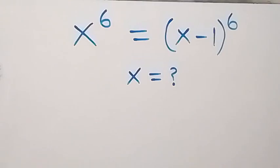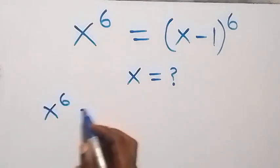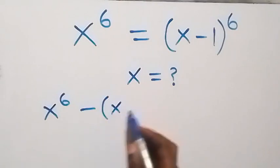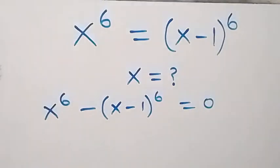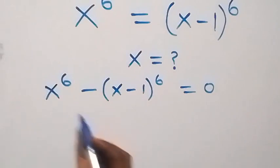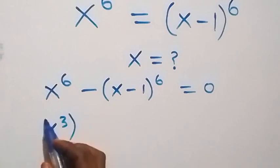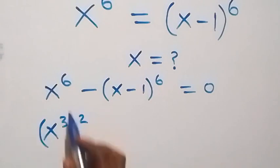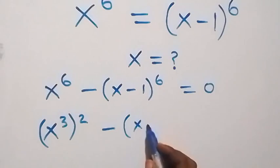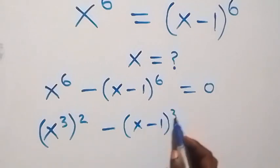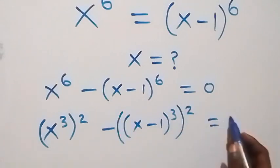Hello, you are welcome. How to solve for x: let's take the right-hand side to the left, and this becomes x raised to power 6 minus (x minus 1) raised to power 6, equals 0. We can rewrite this as (x raised to power 3) raised to power 2, minus (x minus 1) raised to power 3, also raised to power 2, equals 0.